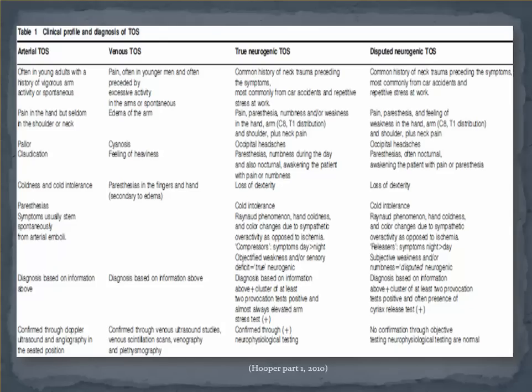This is a nice chart out of the Hooper 2010 paper that lists features amongst different types of TOS. Having a diminished pulse or coolness of the skin, particularly in the distal extremity, may point to a more arterial cause, where a puffy, edematous extremity that is cyanotic should point to a more venous cause. Hand coldness is one of those symptoms you can see in both arterial and neurologic cases — whereas the arterial symptoms are due to ischemia, the neurologic symptoms may be due to Raynaud's phenomenon. Essentially an overactive sympathetic nervous system whose fibers run circumferentially around the C8 and T1 nerve roots, when aggravated, can produce the hand coldness or color changes traditionally seen with this disorder.